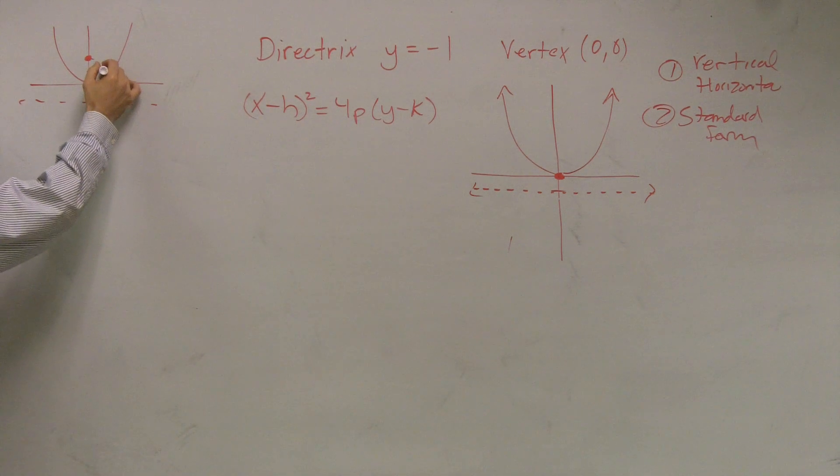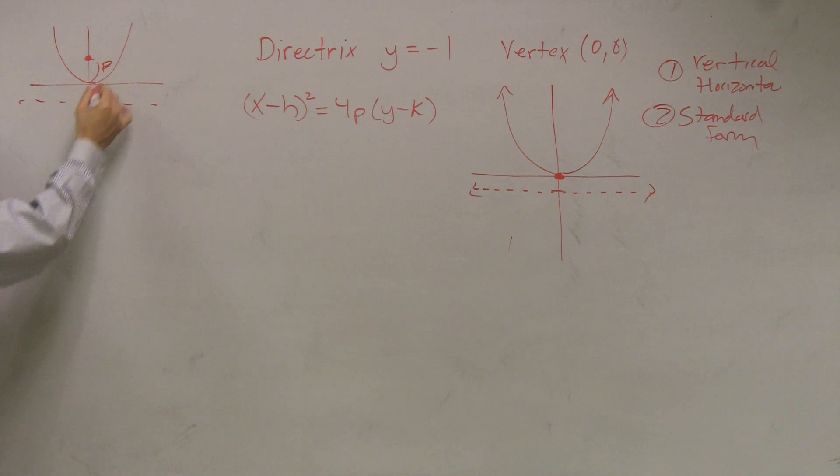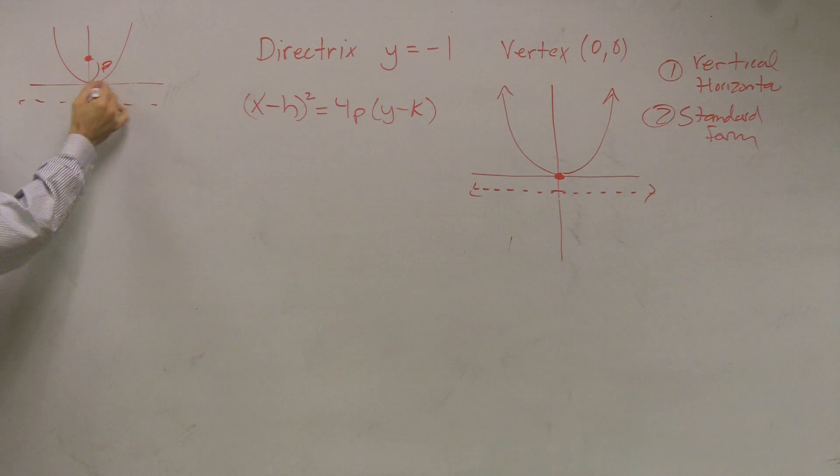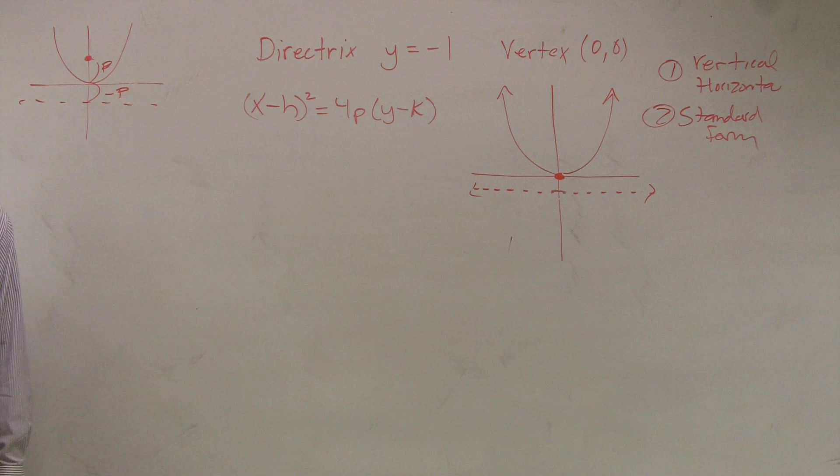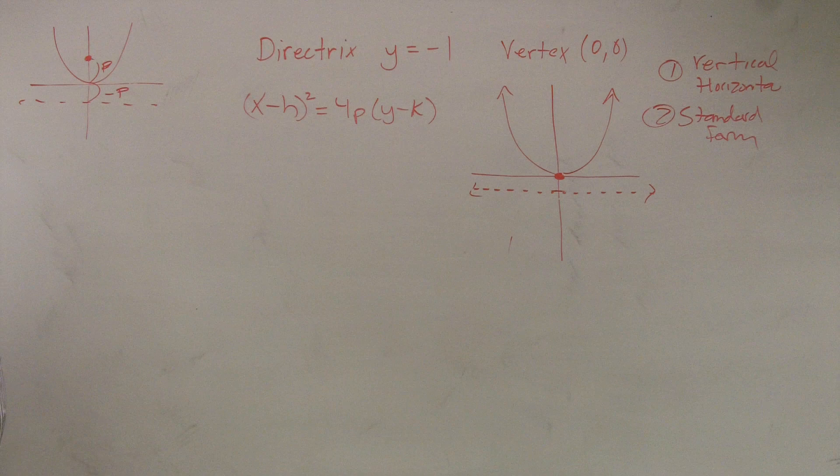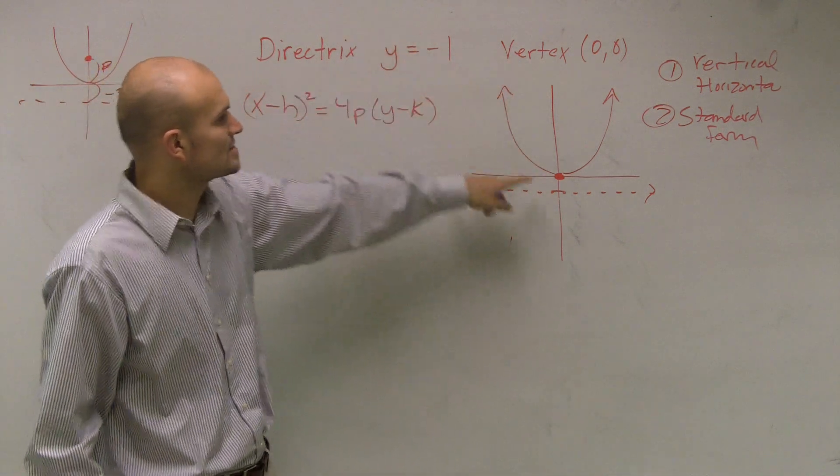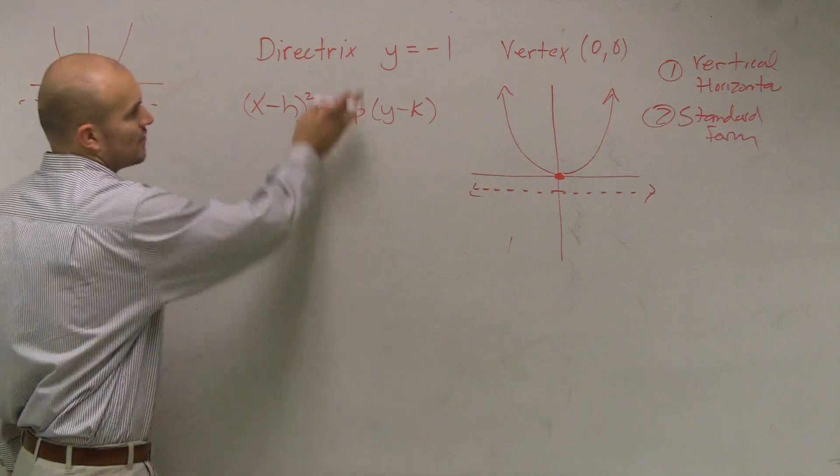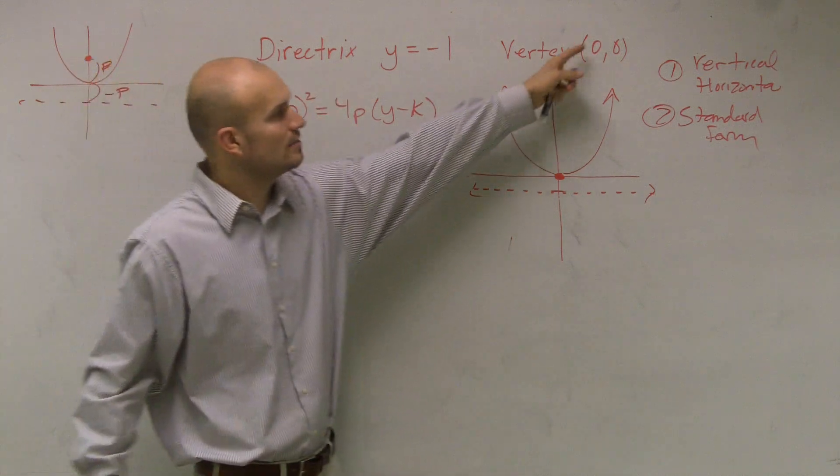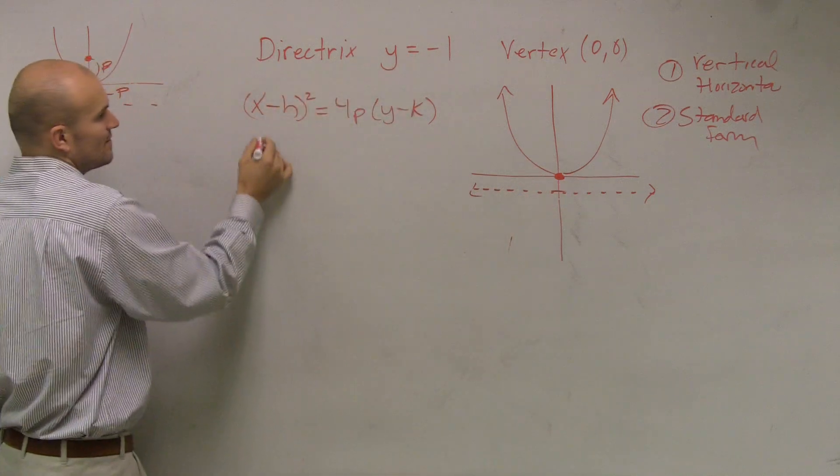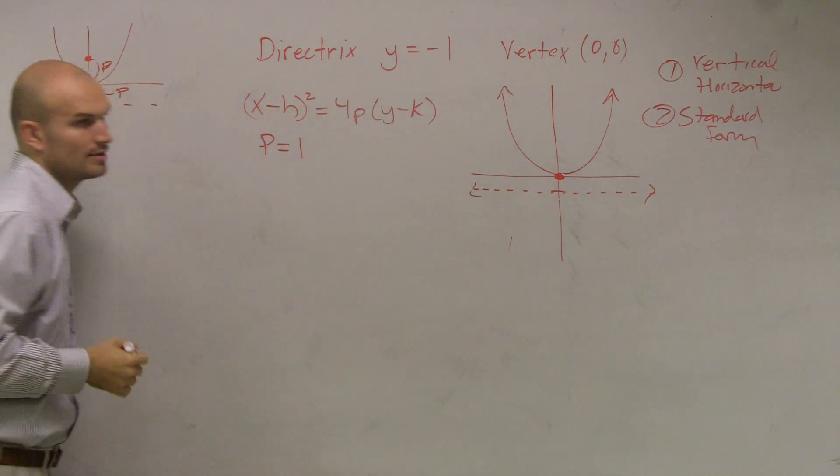Now, here's the thing we need to remember. Remember I told you this value, which was p. The distance from your vertex to your focus, you had to add p. And then to go down here, you had to subtract p. So if my directrix is at y equals negative 1, and I have a vertex at 0, 0, my p value, since I add to my p value, is now going to equal a positive 1.